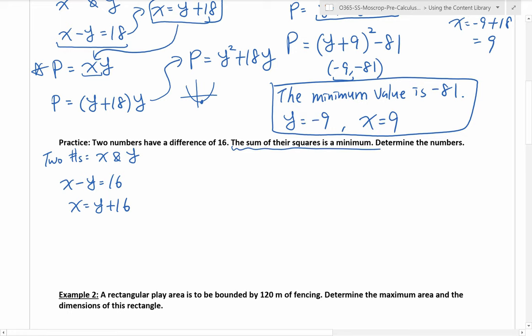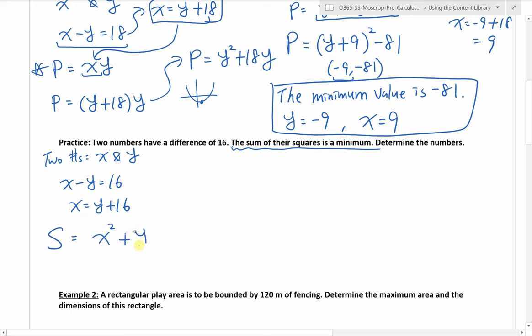Hopefully that's what you have to begin with. Two numbers have a difference of 16, so x minus y is 16, which means x is equal to y plus 16. Now the second portion of this problem says the sum of their squares is a minimum. Sum recall is the addition, so sum equals x squared plus y squared. It tells us that this is a minimum — it's given to us already, which is perfect.